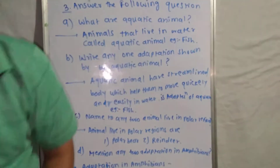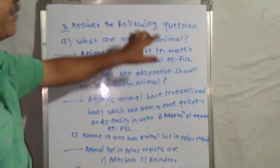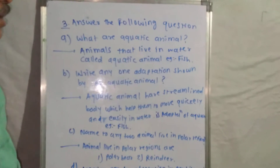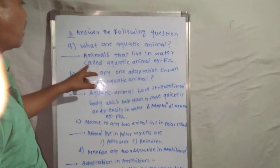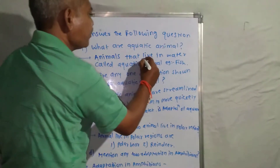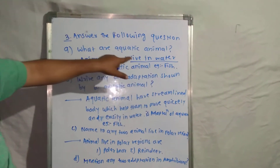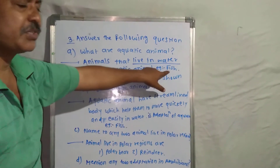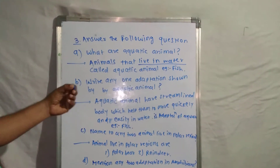The first question is: 'What are aquatic animals?' Animals that live in water are called aquatic animals. This is a simple definition. An example of an aquatic animal is fish, which lives completely inside the water.